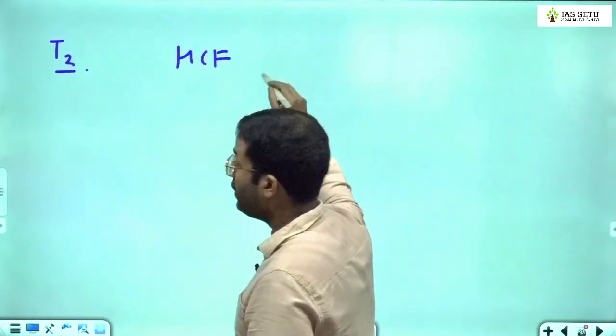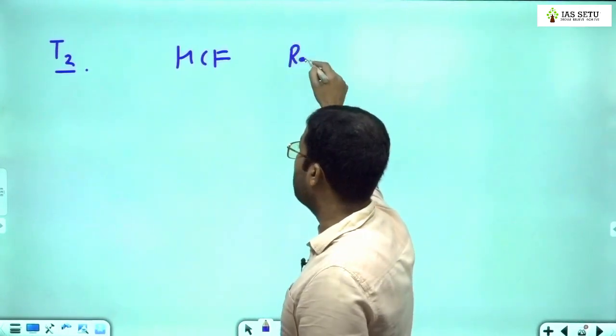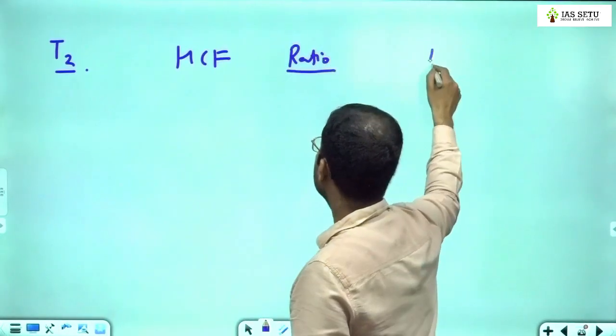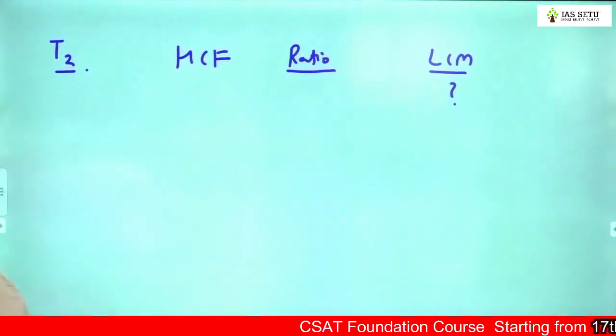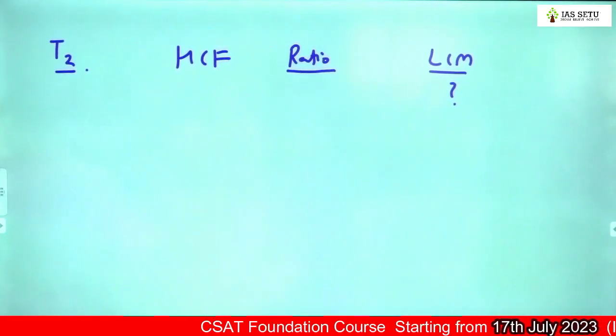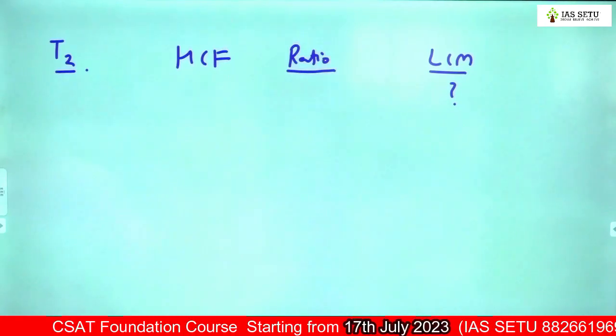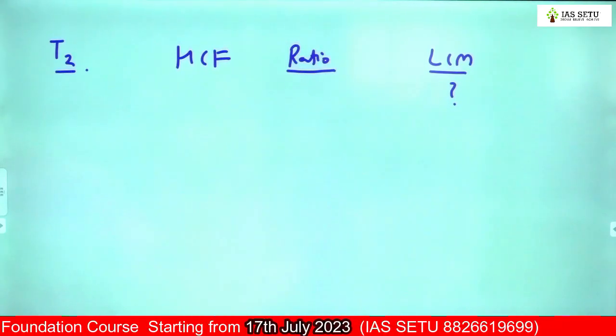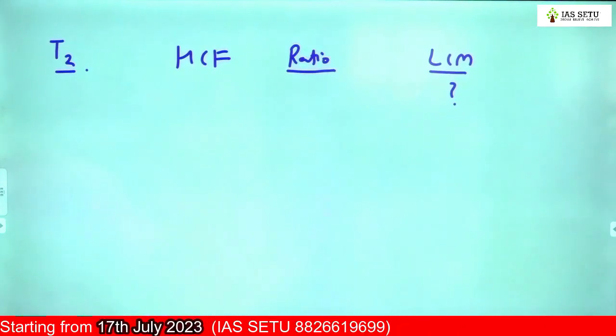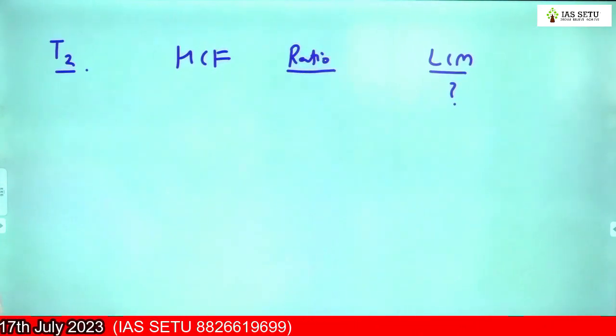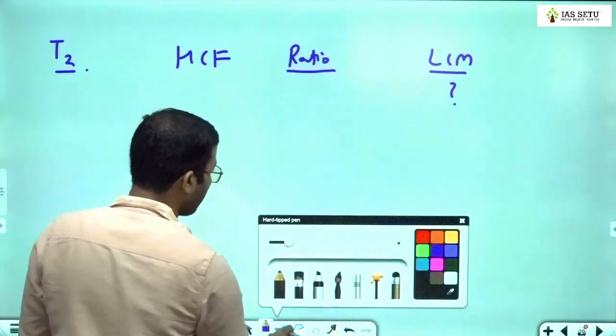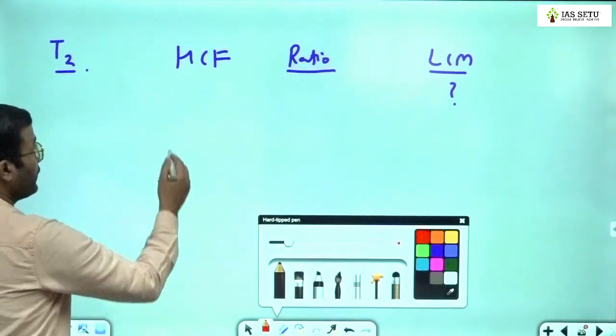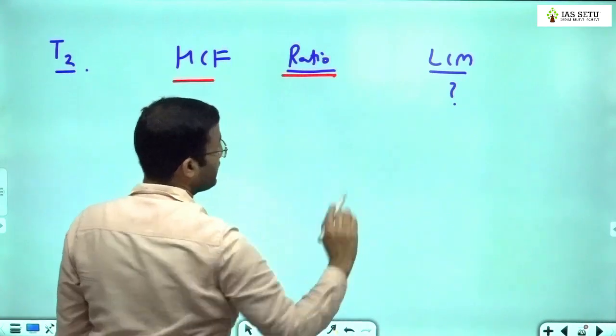When the examiner gives you HCF and the ratio of the numbers and asks for LCM, I'll give you a shortcut. If you want to understand the concept behind the shortcut, you have to wait for 15-20 minutes. After that, I will tell you a wonderful table where you can understand. So now here they give HCF, they give ratio, they ask for LCM.